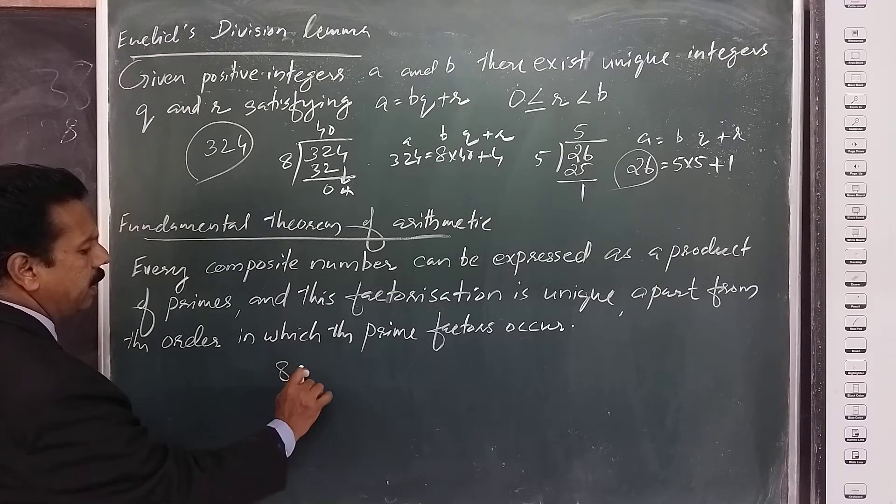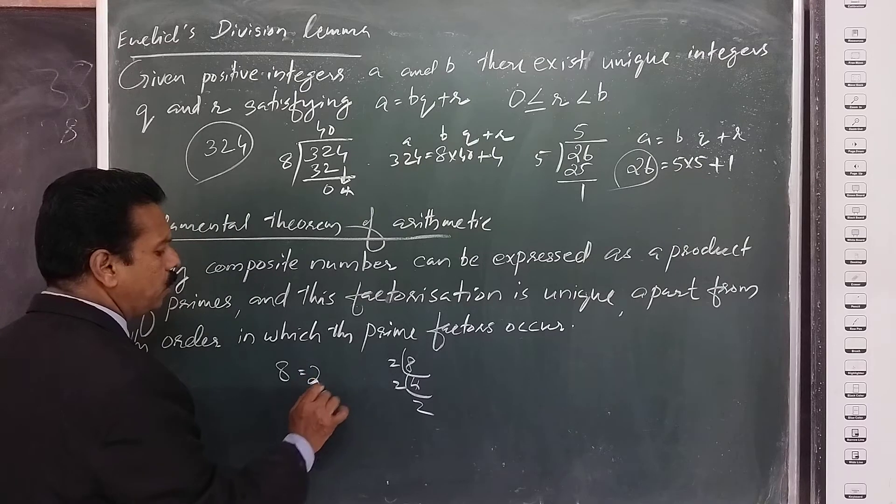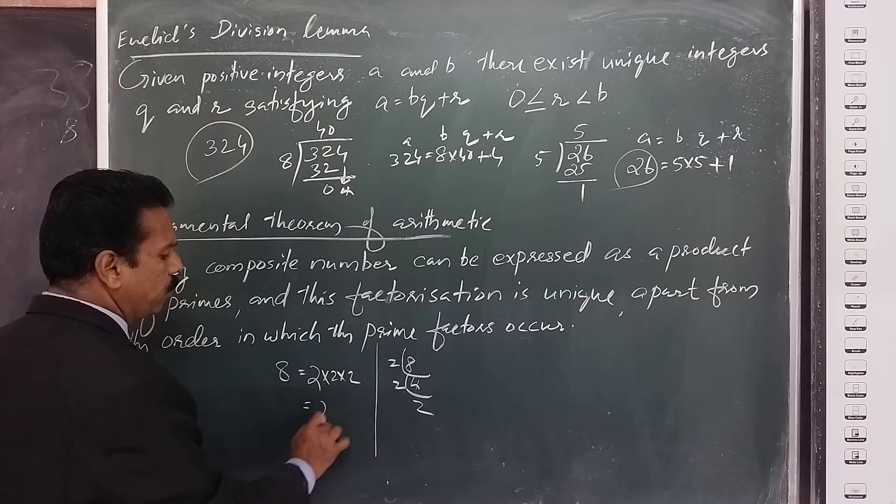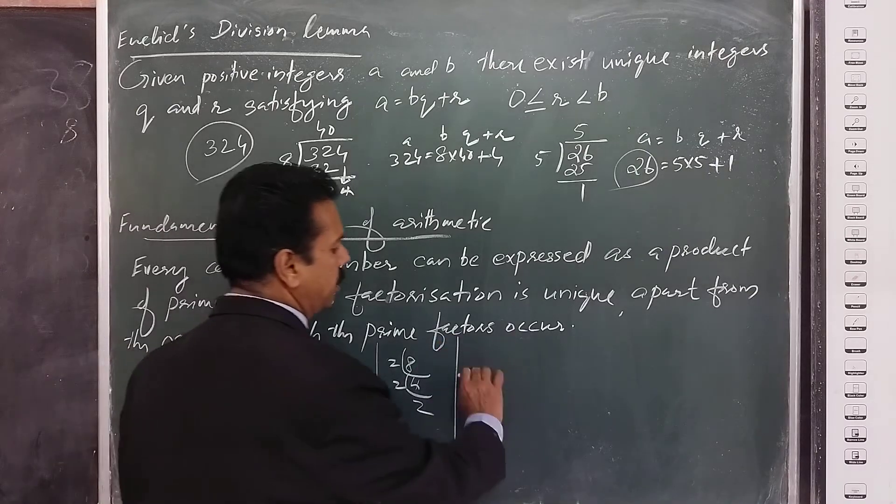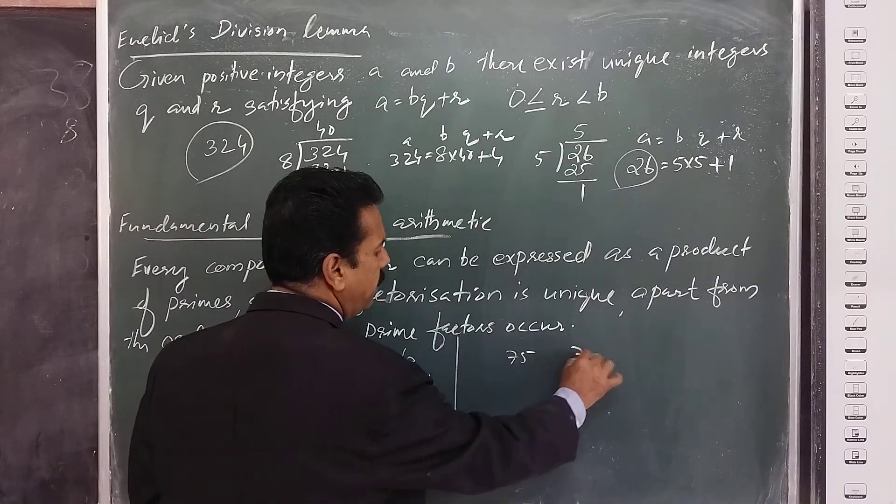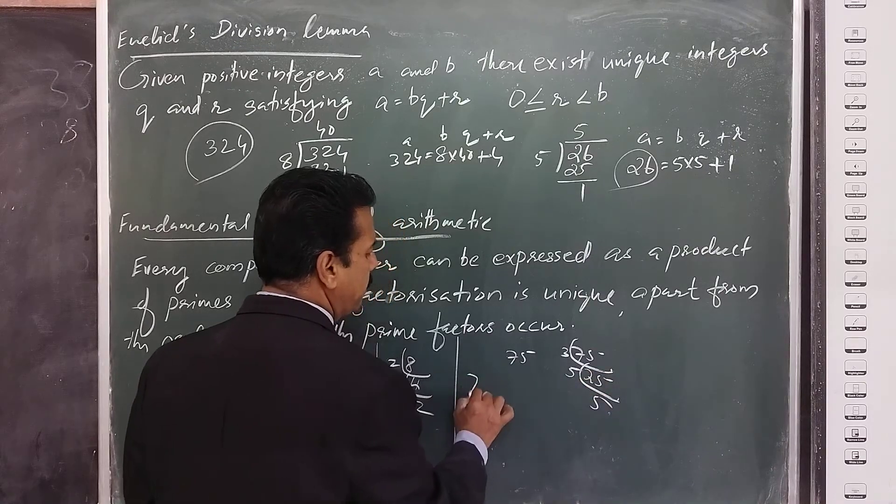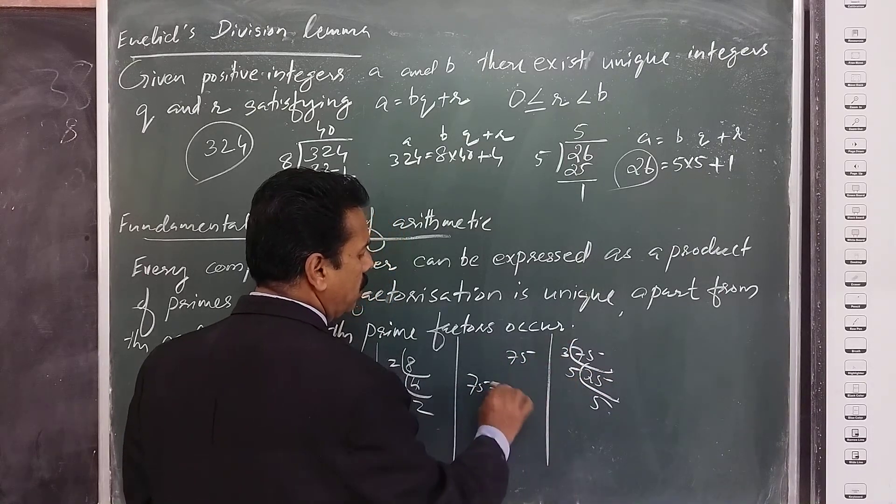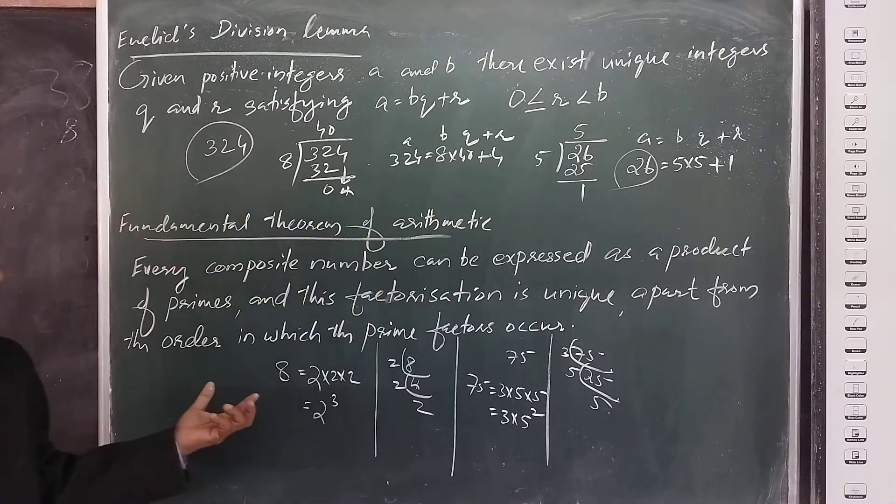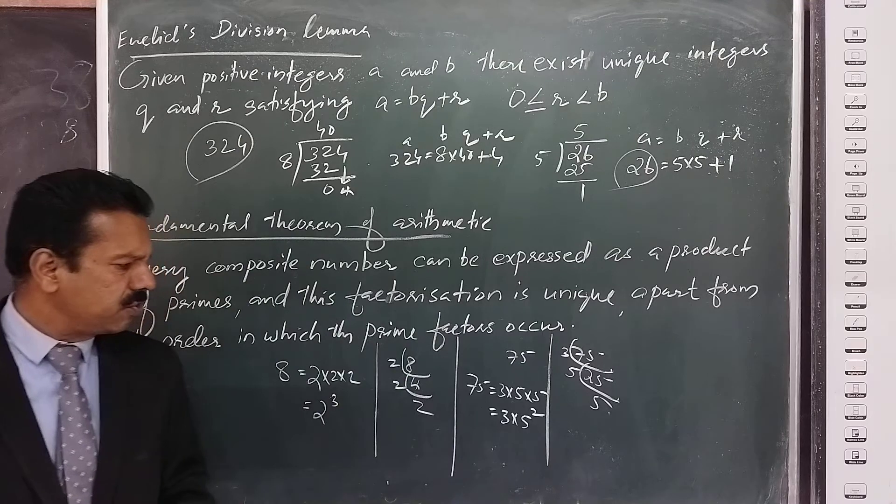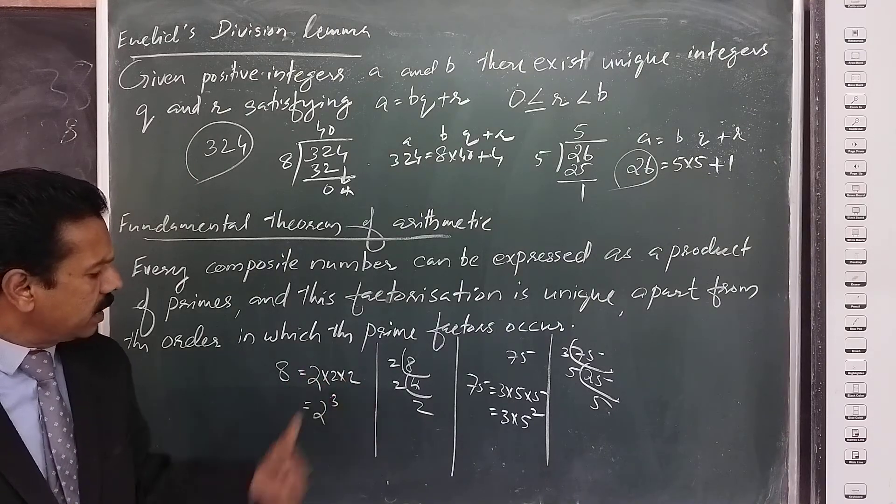For example, 8 equals 2 times 2 times 2, or 2 cube. The number 8 we can express as 2 to the power of 3. Another example is 75. We can divide it with the prime number 3, then 25, another prime number 5, then 5. So 75 is equal to 3 into 5 into 5, or 3 into 5 squared. Every composite number can be expressed as a product of prime numbers.